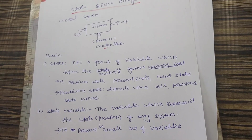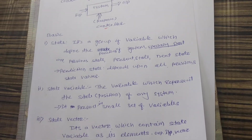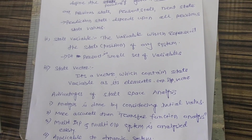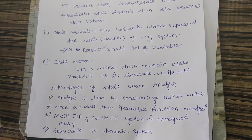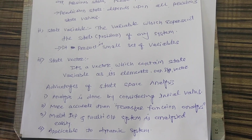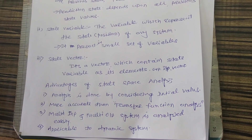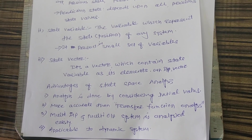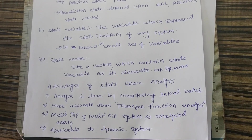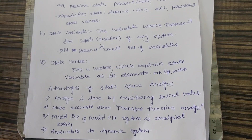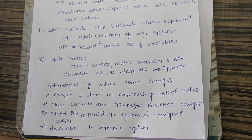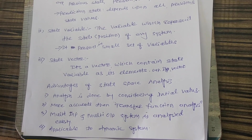Next is 'state vector.' It is a vector which contains the state variables as its elements. So this vector holds the input state variable, output state variable, and the response state variable — all represented in the form of a vector.